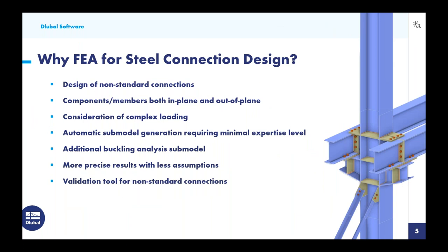Why would we utilize FEA for steel connection design? The biggest benefit is the design of non-standard or unique connections. Most software offers solutions for basic or standard connections, but when we look at a connection with many different components it becomes more difficult. This new steel joints add-on in RFEM allows us to consider components and members both in-plane and out-of-plane in one single FEA model. We can also consider complex loading — the member internal forces at the joint will simply be used for the connection design, so no need to export forces to an external program. Everything is done within this single file.